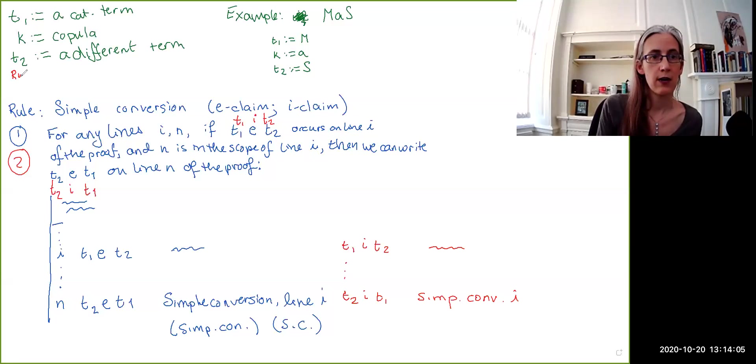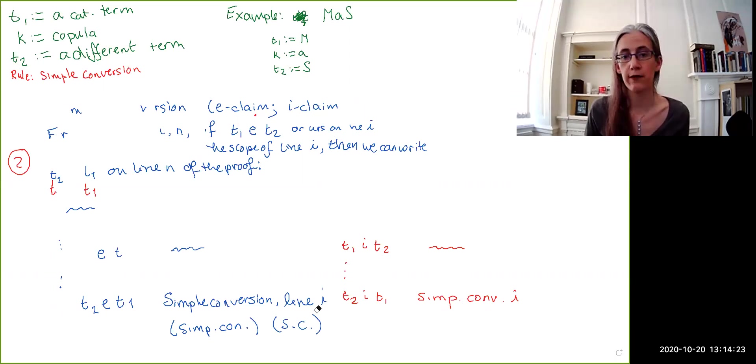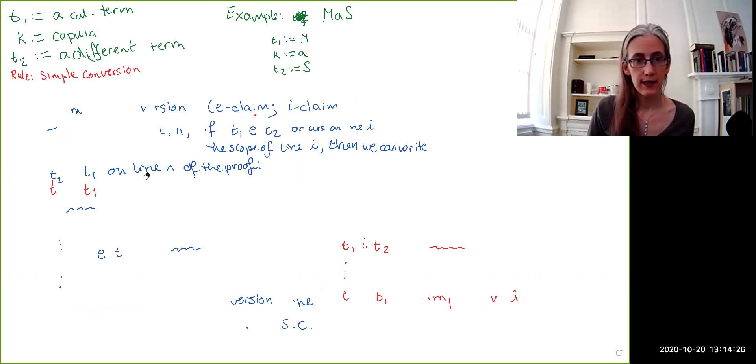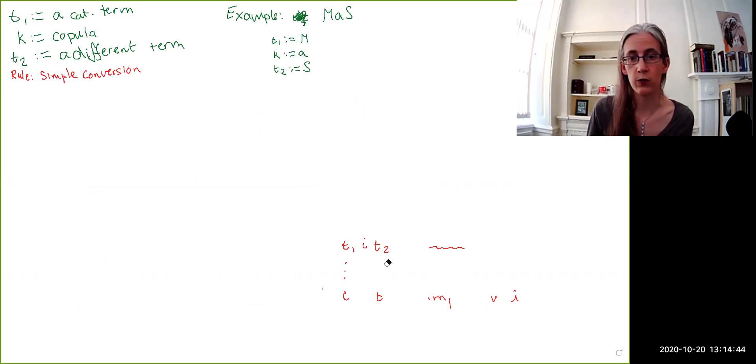So, I'm just going to write this down up here so that I can erase the rest of the board and give us some space to do our second rule. The second rule is also going to come in two flavors, but instead of applying to E and I claims, it's going to apply to A claims and E claims. So, the universal ones are the ones that we can apply this second transformation rule. So, let's just get everything cleared away. There we are. So, our second transformation rule is...